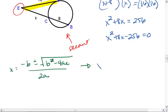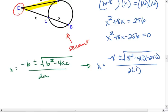This tells us that x will equal negative 8, plus or minus 8 squared, minus 4 times 1, times negative 256, all over 2 times 1. When we work this out, we find out that x equals negative 4 plus or minus 4 times the square root of 17.